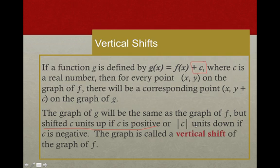If c is negative, then we're going c units down if c is negative. And this is called a vertical shift.